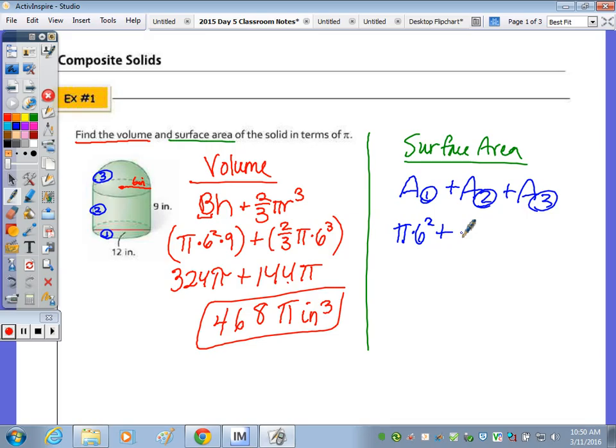The circle is going to be pi times six squared. The lateral surface area for a cylinder is two pi r h. So two pi times our radius of six times our height of nine. And then for the hemisphere, the formula for the total surface area is four pi r squared. So the area for the hemisphere is going to be half of four pi r squared, which is two pi r squared. So go ahead and simplify and combine to the simplest term in terms of pi.